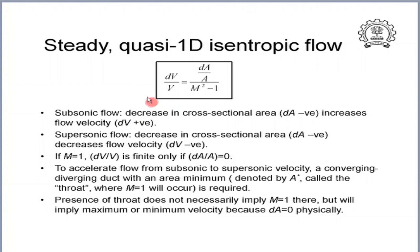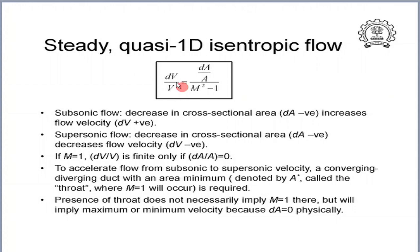Let us interpret the area-velocity relation. The velocity V and area A are always positive. For subsonic flow (M < 1), the denominator M² − 1 is negative, so if the area decreases (dA negative), the velocity increases — consistent with what we are familiar with. For supersonic flow (M > 1), M² − 1 is positive, so if the area decreases, the velocity actually decreases.